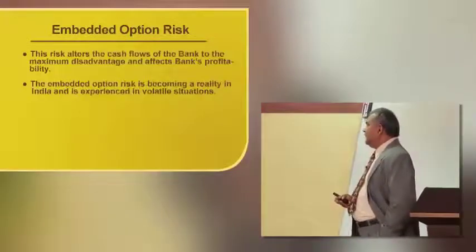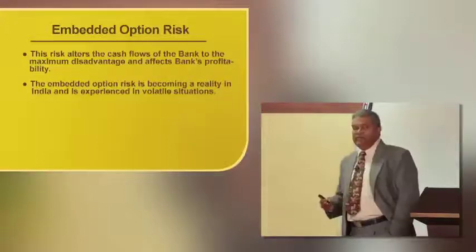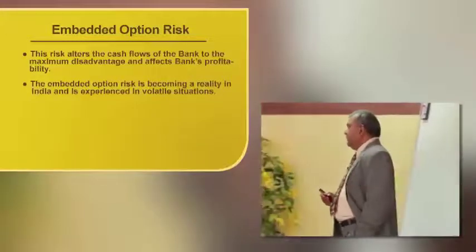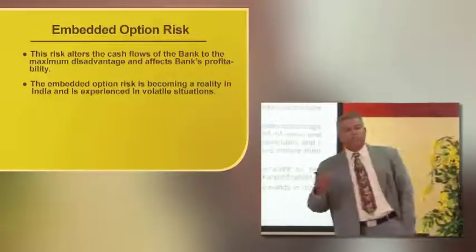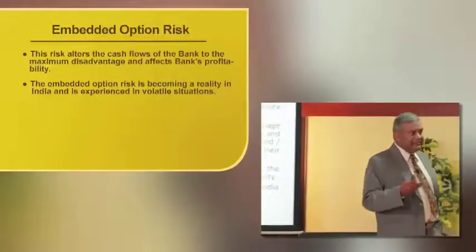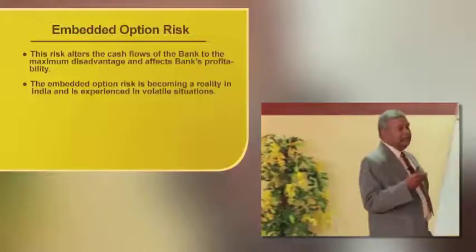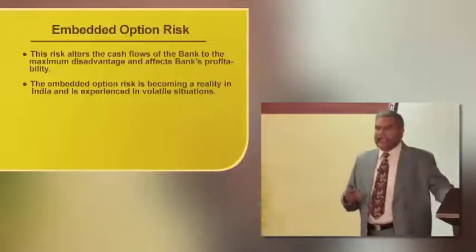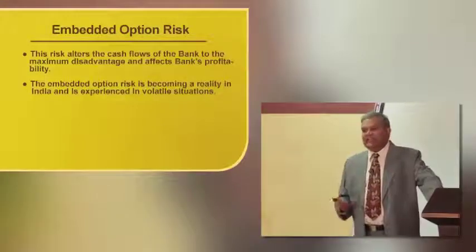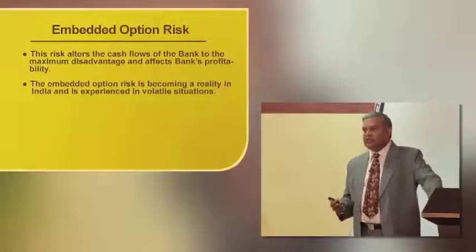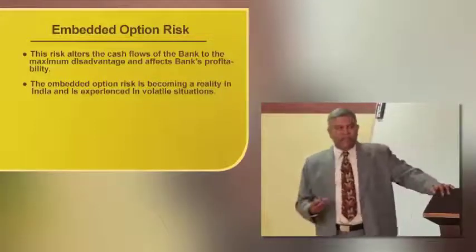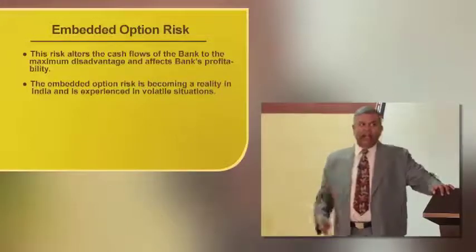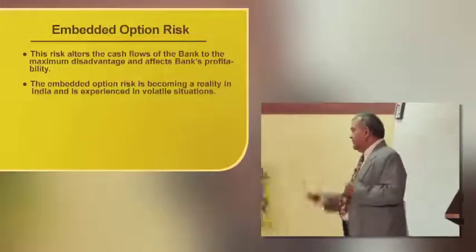The risk alters the cash flow of the bank to the maximum disadvantage and affects profitability. When premature closure takes place, it creates a cash outflow. To meet that cash outflow, the bank has to sell assets at a distress value. When they sell at a distress value, it creates a loss for the bank, and when there is a loss, profitability gets affected.